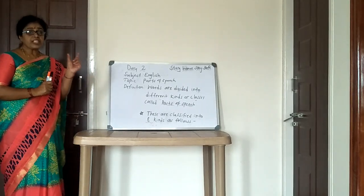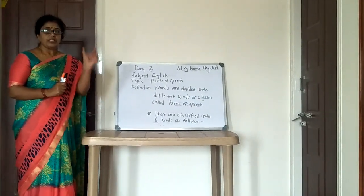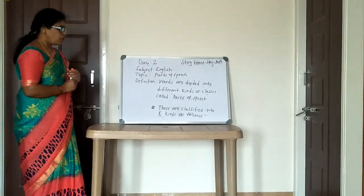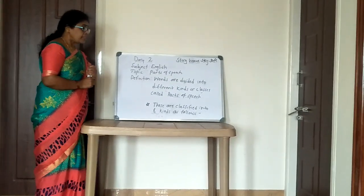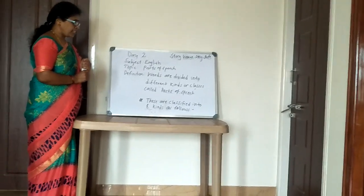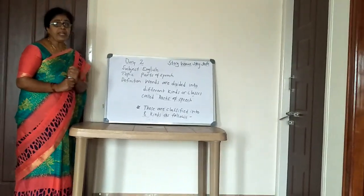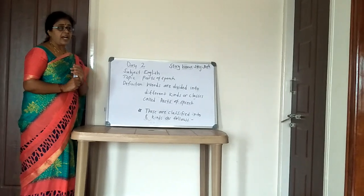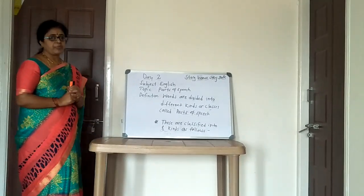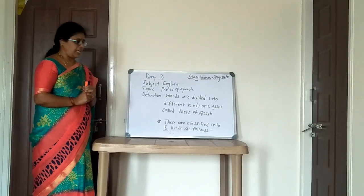So each word in this sentence is a part of speech — that is why each word is divided, and we call it a part of speech. Parts of speech are classified into 8 kinds.